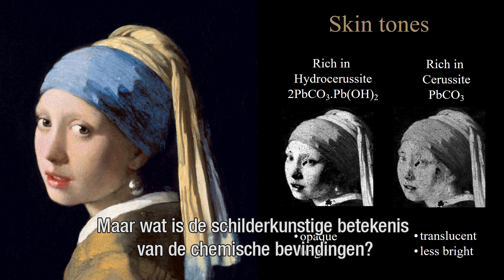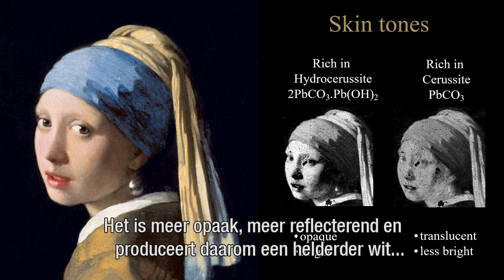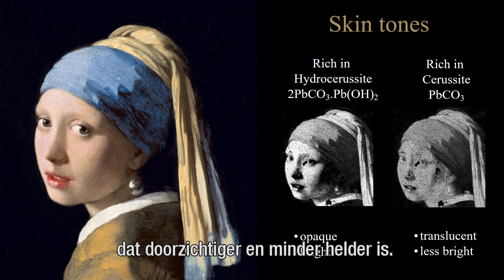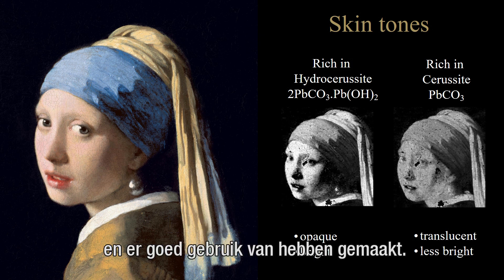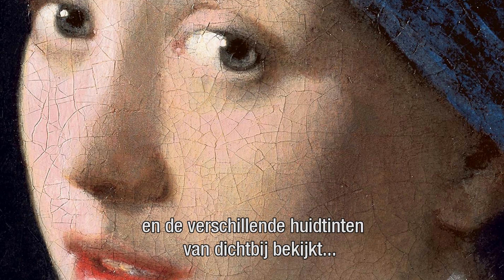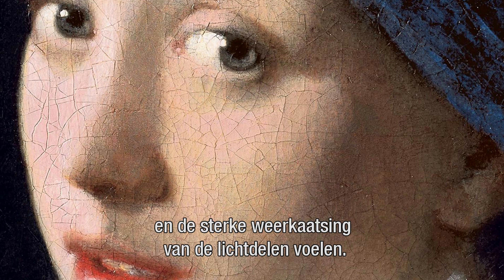But what is the painterly significance of these chemical findings? We know that lead white rich in hydrocerussite has a different optical behavior — it is more opaque, more reflective, and therefore produces a brighter white, compared to the type containing lower concentrations of hydrocerussite, which is more translucent and less bright. Obviously Vermeer must have recognized these differences and made good use of them. When standing in front of the painting and taking a close look at the various skin tones, one can almost sense the translucency of the shadows and the strong reflection of the light parts.